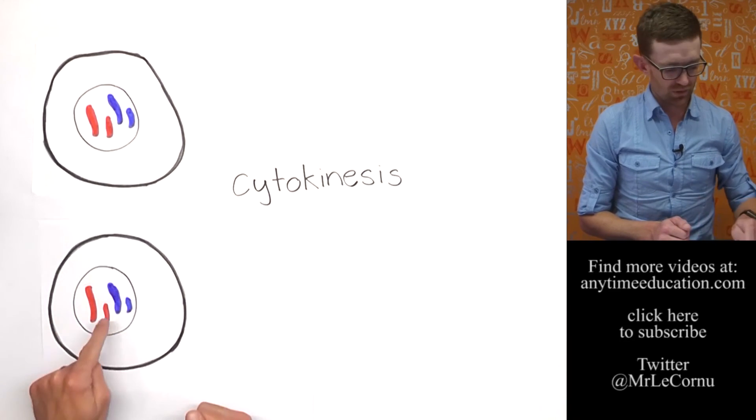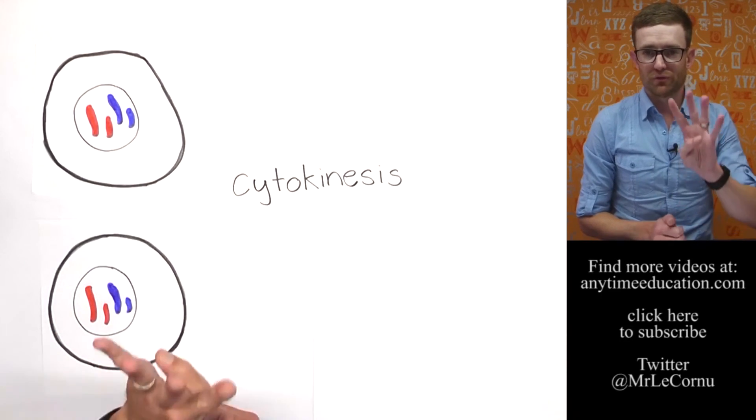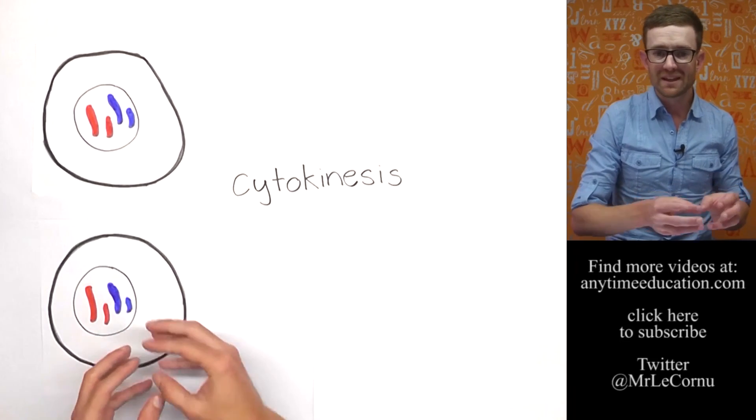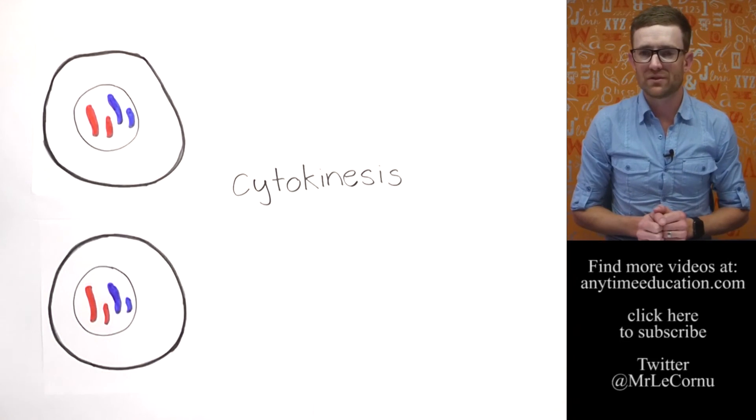And they've each got their own nucleus, and within that nucleus is exactly what we started with in the original parent cell. A big red, a big blue, a little red, and a little blue. Four chromosomes. And we've copied them and then managed to equally divide them, and that happens in mitosis.